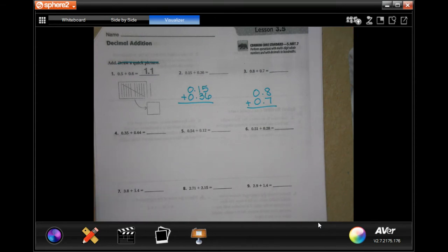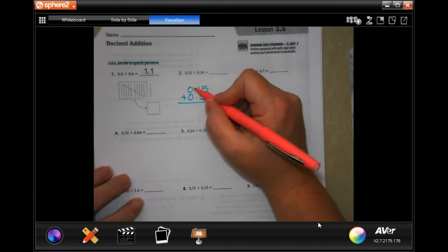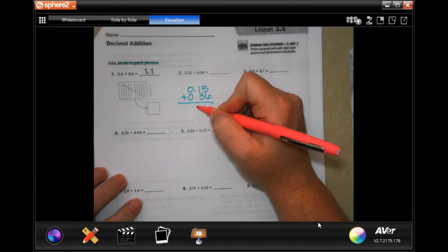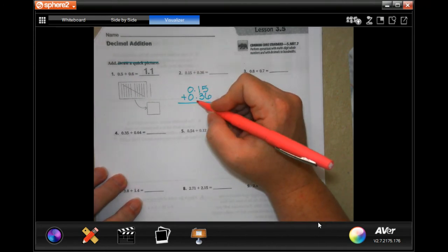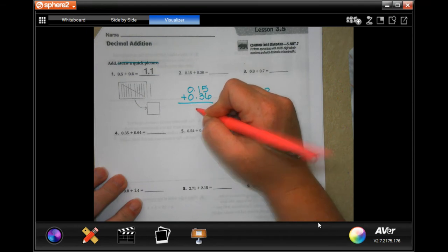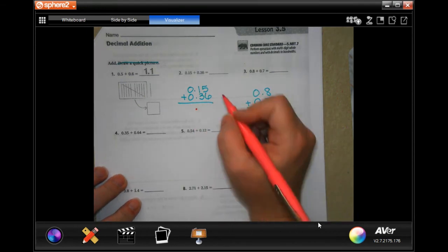Now, the important thing to remember when you are adding or subtracting decimals is that you just have to line up your decimals. So your first step when you are adding or subtracting decimals is going to be to line them up. Your second step is going to be to drop that decimal down. That's it. Drop that decimal.